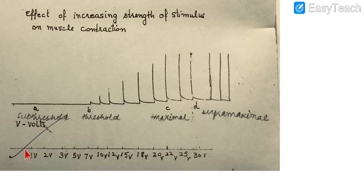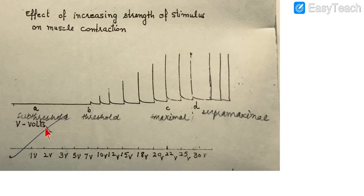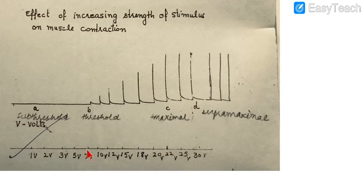When we provide a stimulus of one volt — that is the strength of the stimulus — at this line we aren't getting any response; it's a straight line. When we provide the second stimulus of two volts, still we haven't got any flicker. Flicker means the muscle has contracted. We keep on increasing the strength of the stimulus — say from one to two, then three, then five, then seven, and so on.